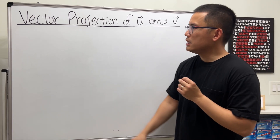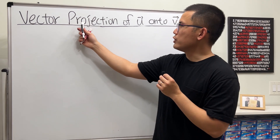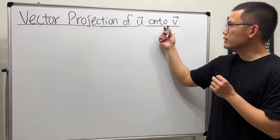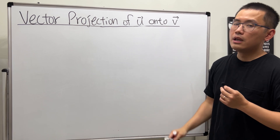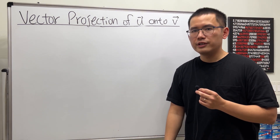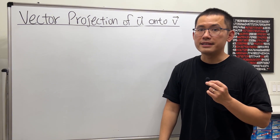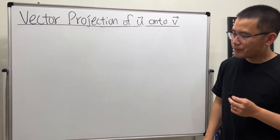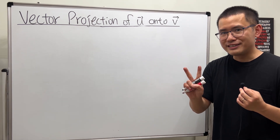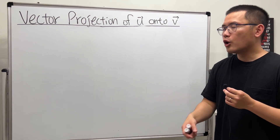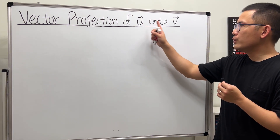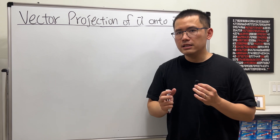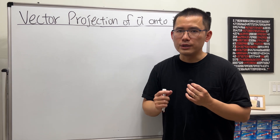In this video, let's talk about the vector projection of the vector u onto the vector v. I will first give you guys an introduction, and then I'll show you guys an example. We have two cases — it depends on the angle between u and v. The first case is when the angle is acute.